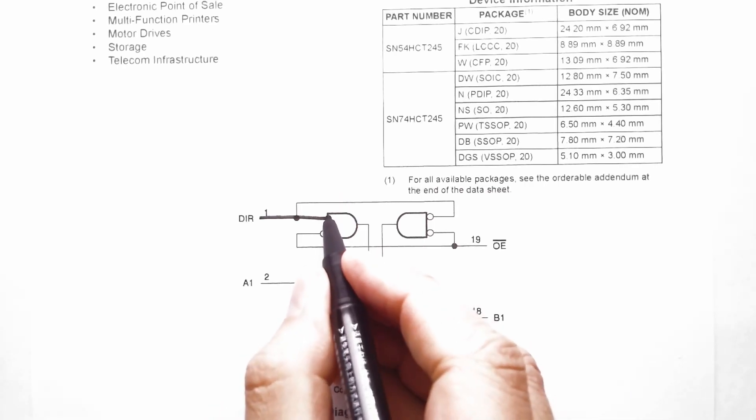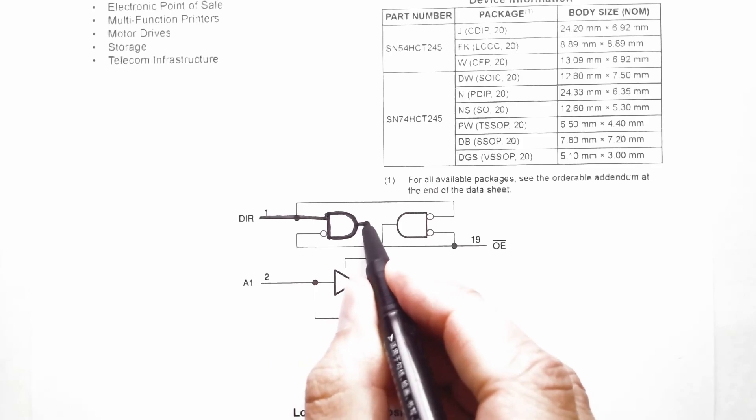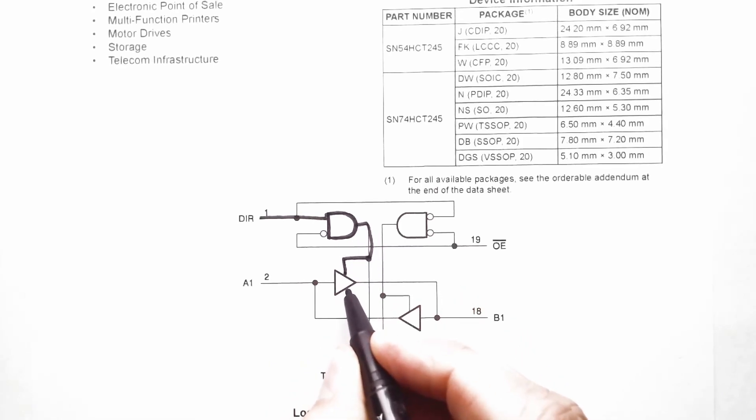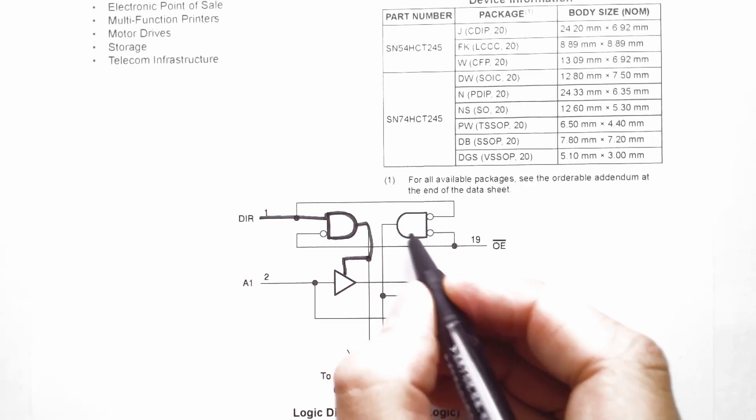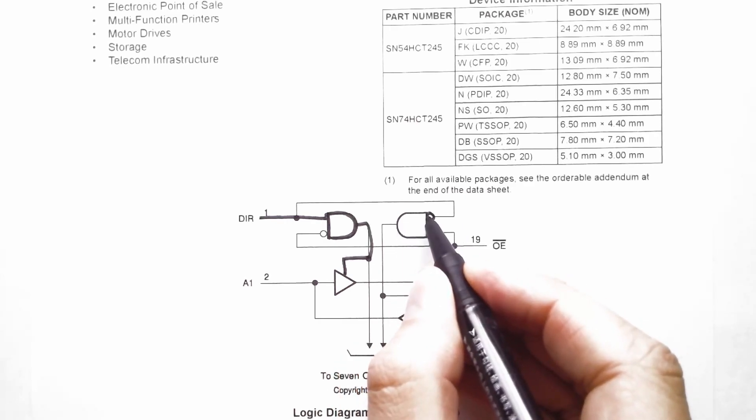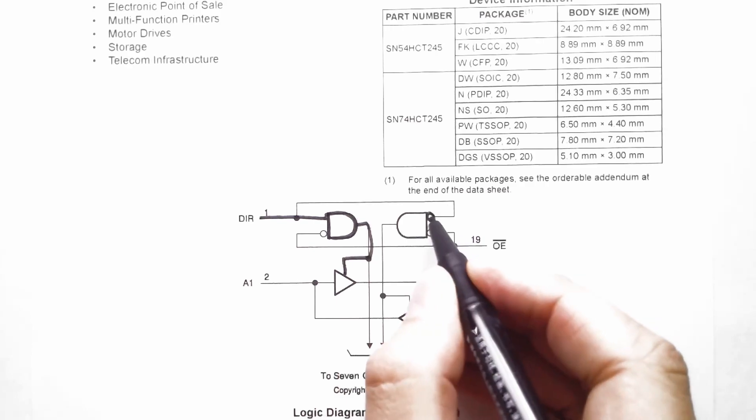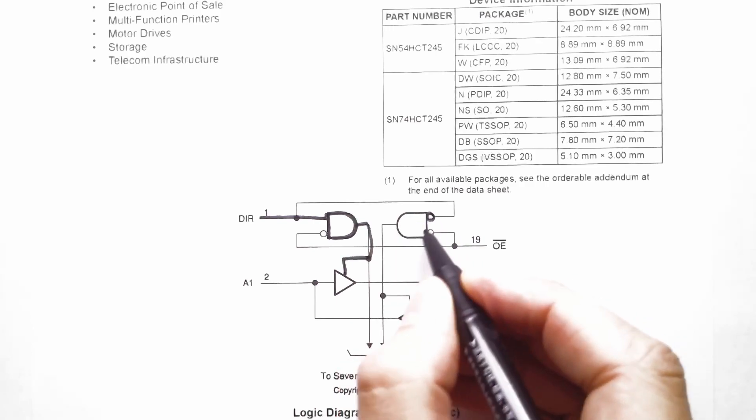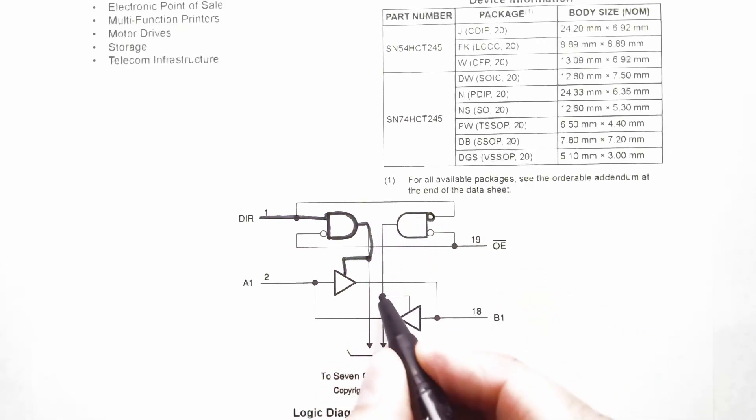So we're enabling this AND gate which will enable this tri-state buffer. But this AND gate will be disabled. Notice that we will have a low coming in here because our direction input here is inverted, so this AND gate will be disabled. With this one disabled then we will have this tri-state buffer turned off.